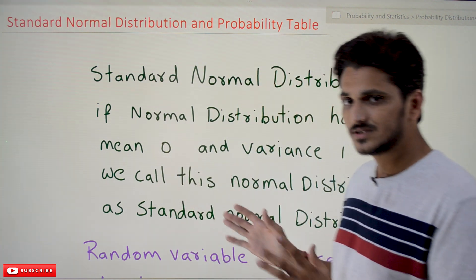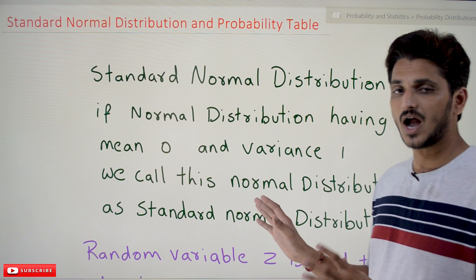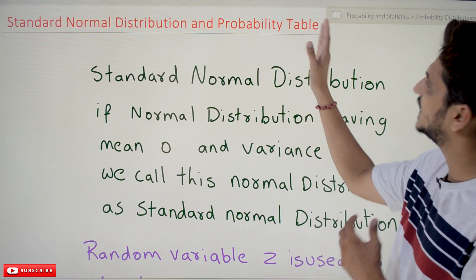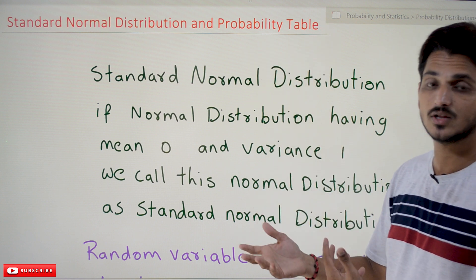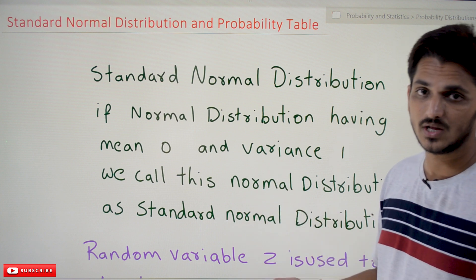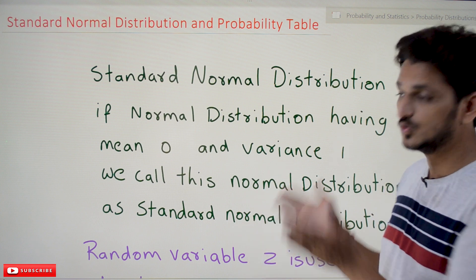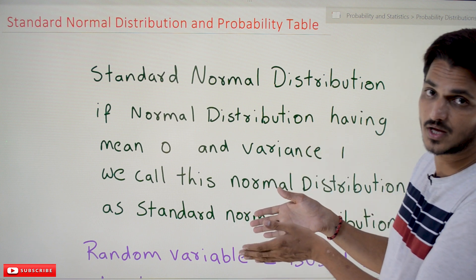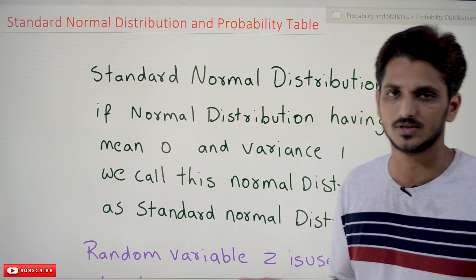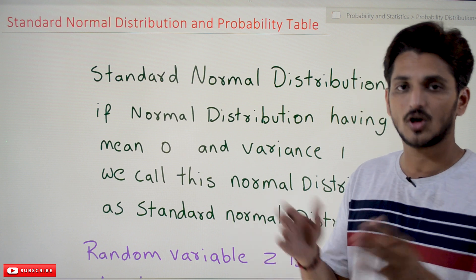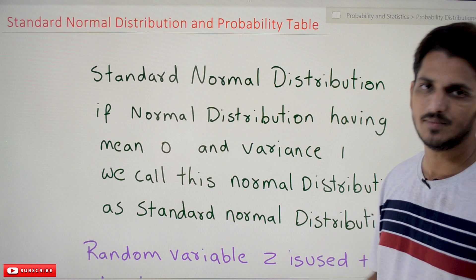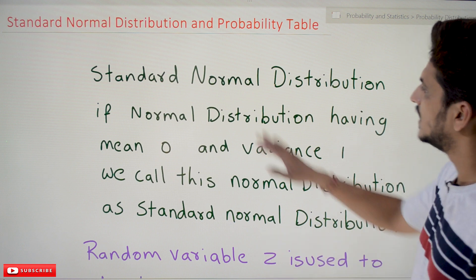Coming to today's class, we are going to understand what standard normal distribution is and what the probability table means. In our coming classes we are going to extend the concept — how to find probability values and how we use this concept in identifying the probabilities of other normal distributions.